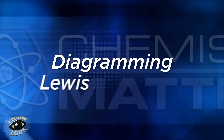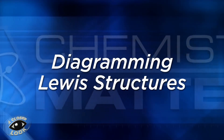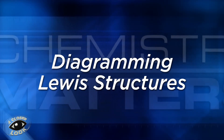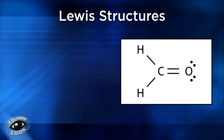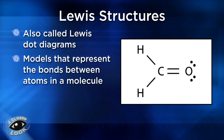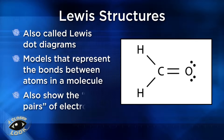In this closer look, you're going to learn how to diagram Lewis structures. Lewis structures, sometimes also called Lewis dot diagrams, are models that represent the bonds between atoms in a molecule and also the lone pairs of electrons, which are additional electrons that are not part of a bond.